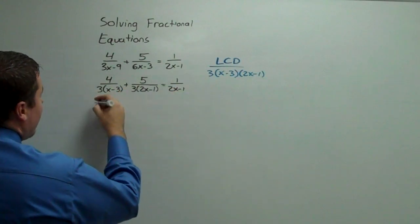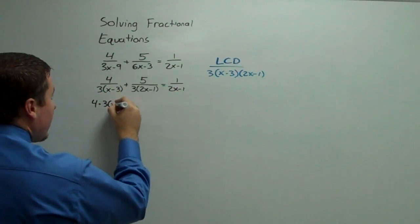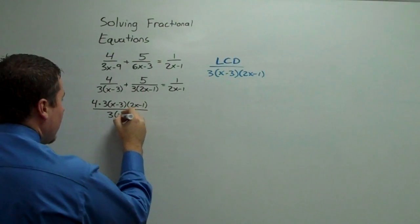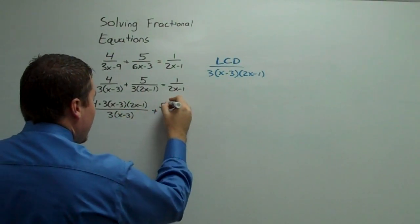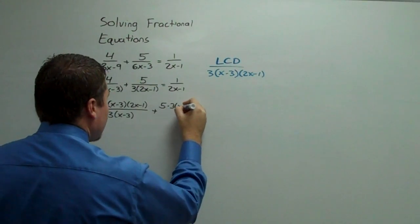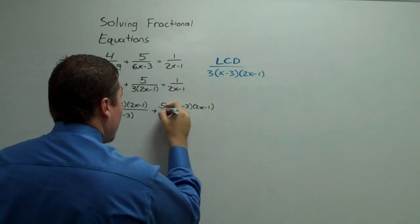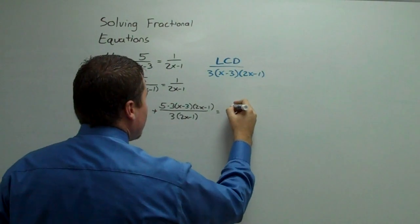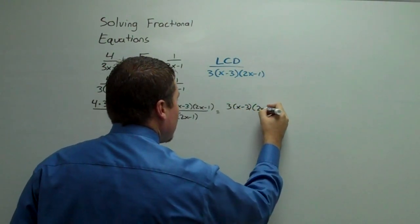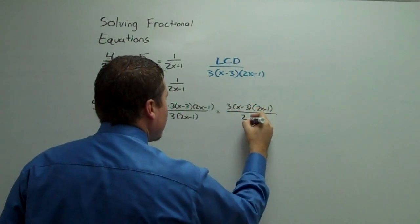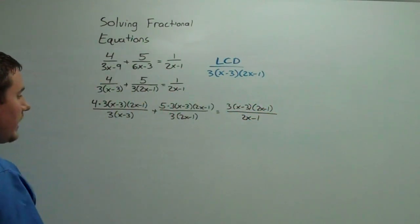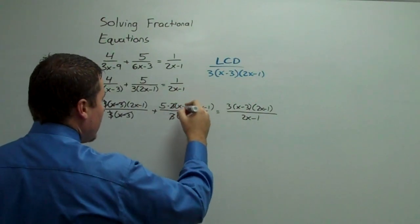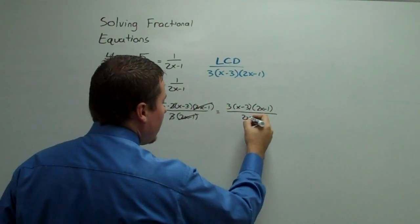So I will do just that. I'm going to have 4 times 3 times x minus 3 times 2x minus 1, all over 3x minus 3, plus 5 times 3 times x minus 3 times 2x minus 1, all over 3 times 2x minus 1, equals 3 times x minus 3 times 2x minus 1, all over 2x minus 1. Now observe what cancels: the 3 and the 3, the x minus 3, the 3 and the 3, the 2x minus 1, and the 2x minus 1.